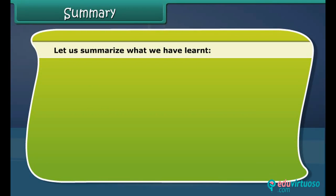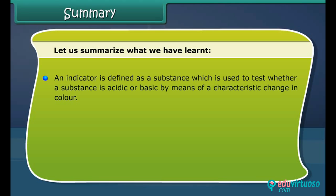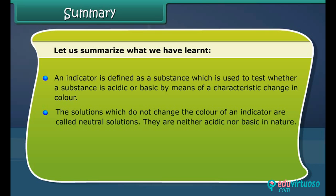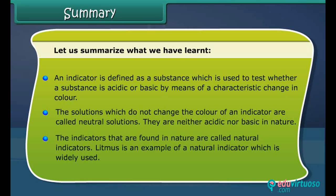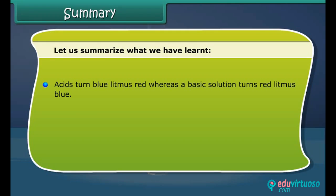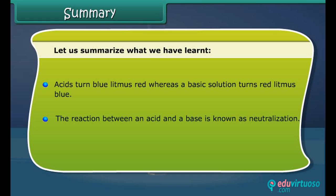In summary: an indicator is a substance used to test whether a substance is acidic or basic by means of a characteristic change in color. Solutions that do not change the color of an indicator are called neutral solutions — they are neither acidic nor basic. Natural indicators are found in nature; litmus is a widely used example — an acidic solution turns blue litmus red, whereas a basic solution turns red litmus blue. The reaction between an acid and a base is known as neutralization.